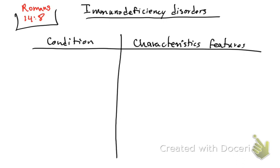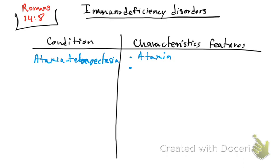The first condition we are going to see is called ataxia telangiectasia. So the name 'ataxia telangiectasia' — let's break it down and figure out the two key parts of this disease from the name itself.